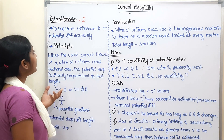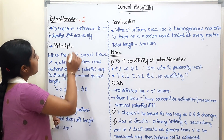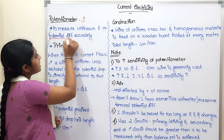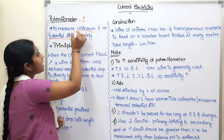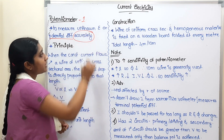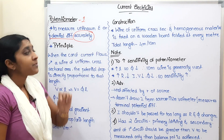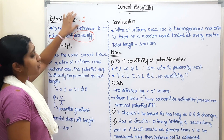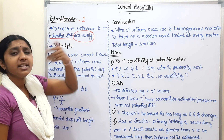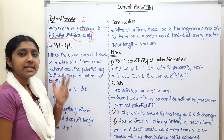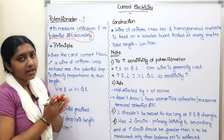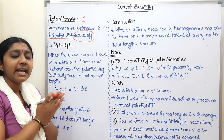If we use a potentiometer, we will use it accurately. It has many applications — measuring internal resistance or EMF of a cell.